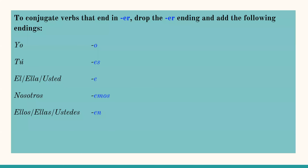Here we have the endings that we will add to the verbs after we have dropped the ER. So when you have a verb in the infinitive that ends in ER, you're going to drop the ER ending and you are going to add the following endings. We have for yo: